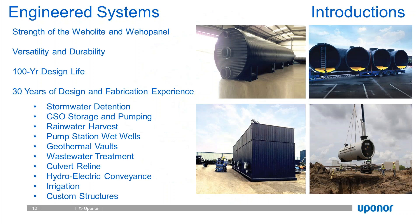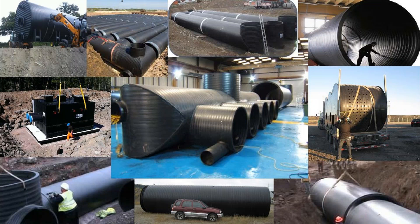We can fabricate stormwater detention structures, CSO pump stations, wastewater treatment applications, geothermal vaults, irrigation systems, custom structures, and culvert realignments—the sky's the limit. Rather than go through a laundry list, it's best to show you photos of the types of systems. These next slides are photo collages of the types of systems we can fabricate. Here you can see a header system for a CSO manifold, stormwater detention, perforated infiltration designs, utility pull box structures, water quality control structures, outlet controls, culvert realignments, and manholes.